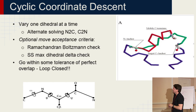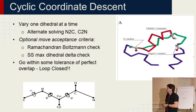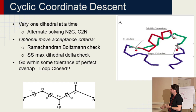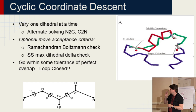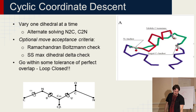The way we do this in Rosetta is you vary one dihedral angle at a time, working from one end and then the other, going back and forth. You can also put in optional move acceptance criteria — for example, a check to make sure the angle you just picked makes sense from the Ramachandran plot, or you could set maximum dihedral changes. At the end of the day you apply a filter to determine whether you actually have a closed loop based on some tolerance for the RMSD.